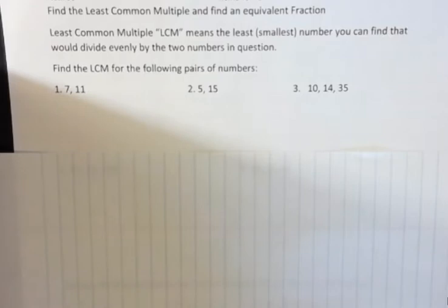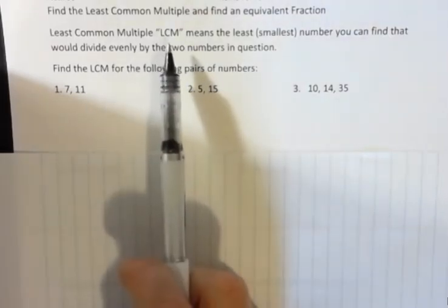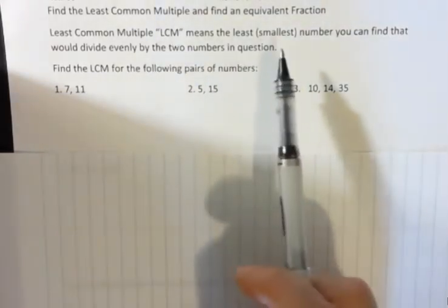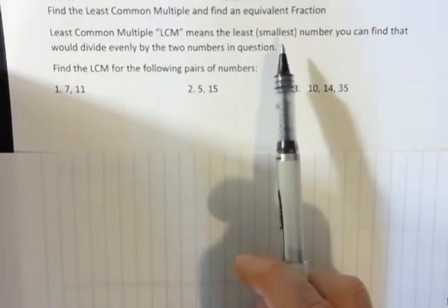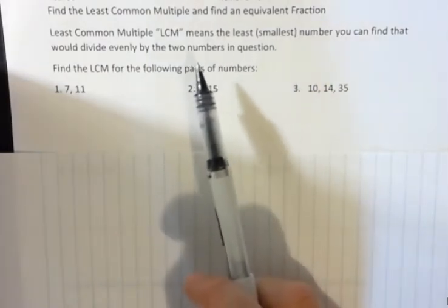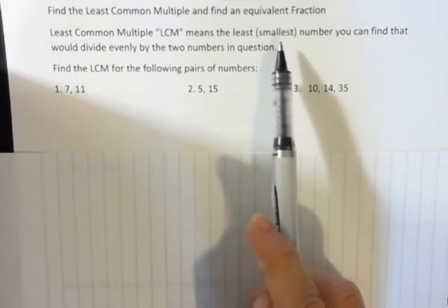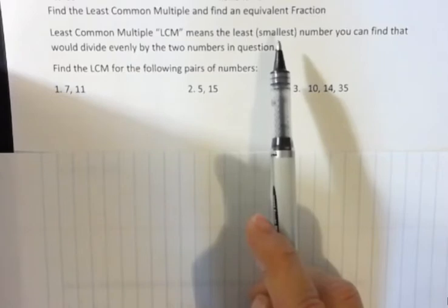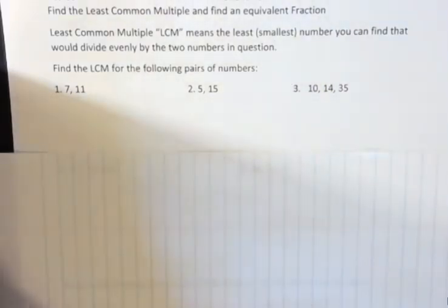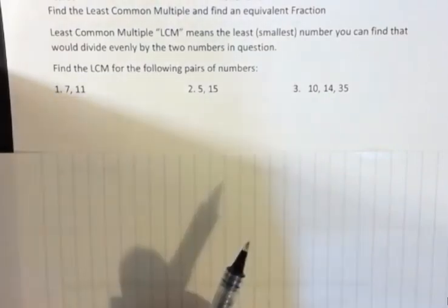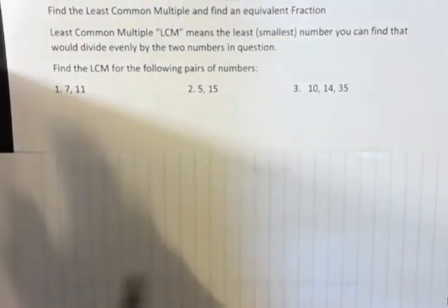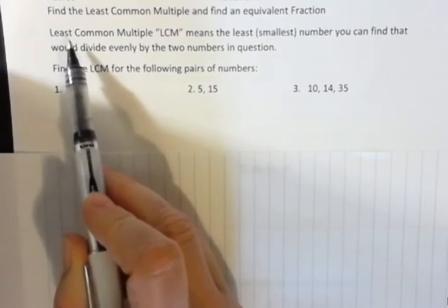Least common multiple, abbreviated as LCM, means the least or smallest number you can find that would divide evenly by the two numbers in question. We don't just say smallest because small just talks about size, not really about quantity, so it's a little deceptive. We could write something really teeny tiny and say that's a small number, but it might be that we wrote one million really teeny tiny, right? So least is a better number. That's why we use that in this definition.